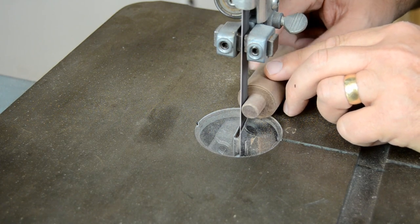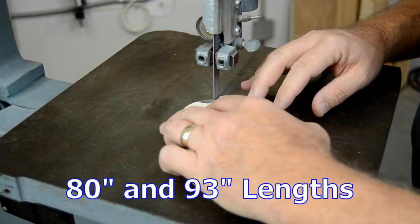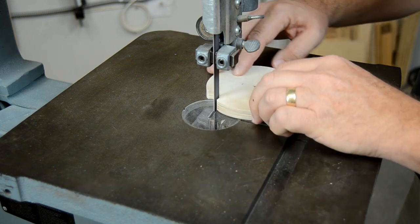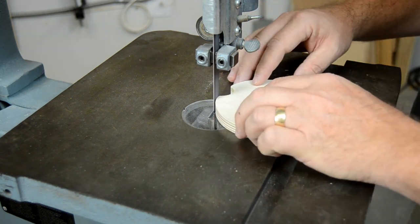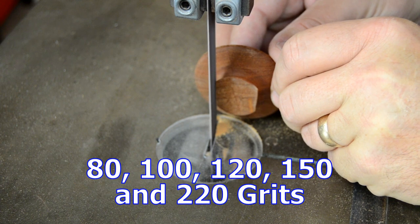They're available in 80 and 93 inch lengths to fit the most popular bandsaws, and you can order them in five grits from 80 to 220.